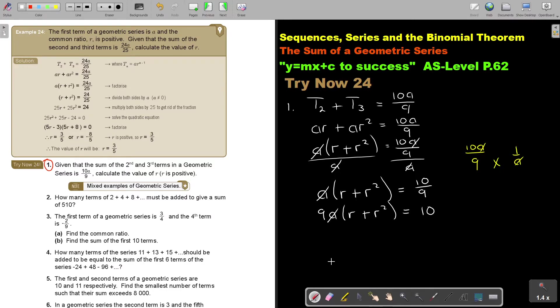So basically, or if you are, I think it's good enough. So 9R plus 9R squared equals 10. So 9R squared plus 9R minus 10 equals 0.